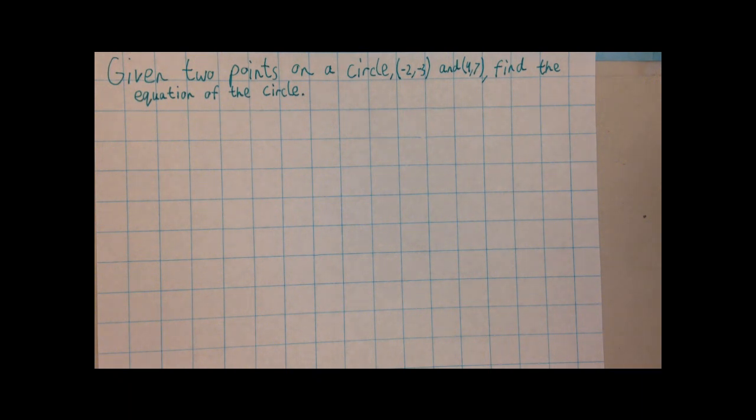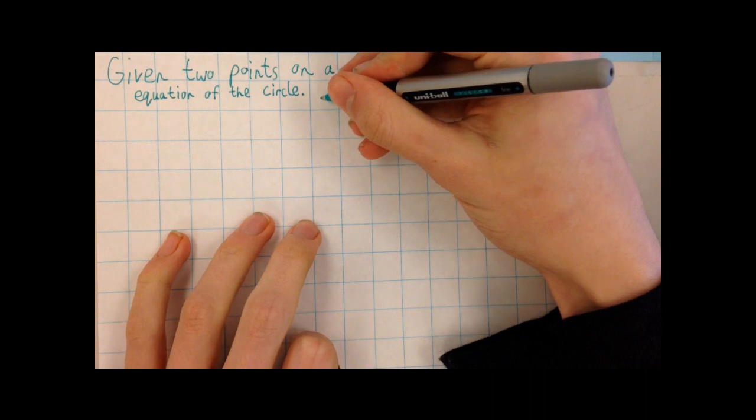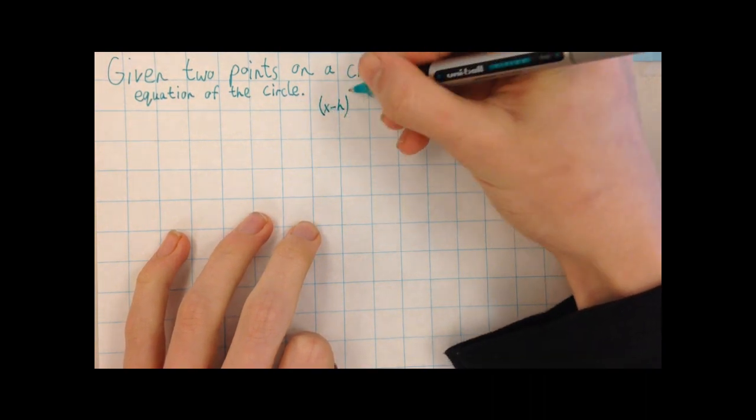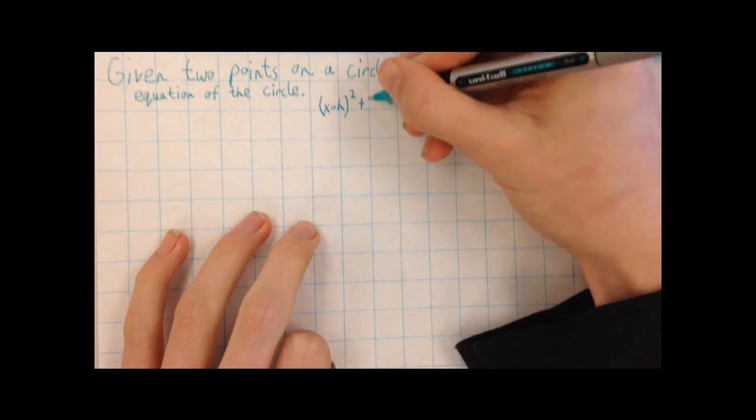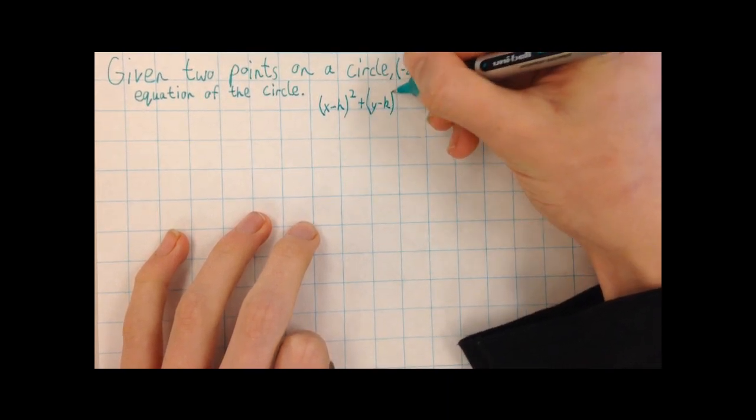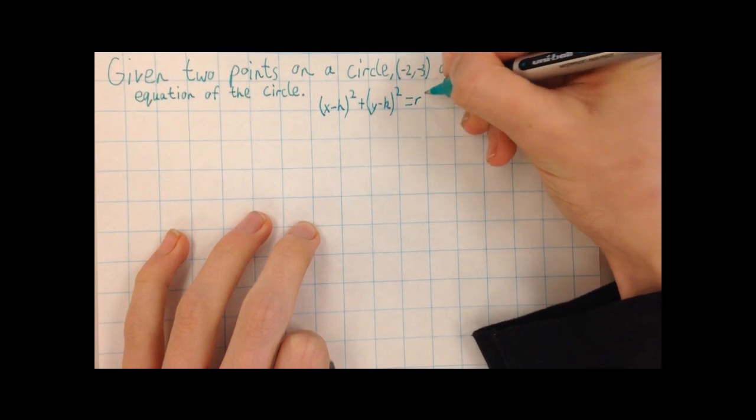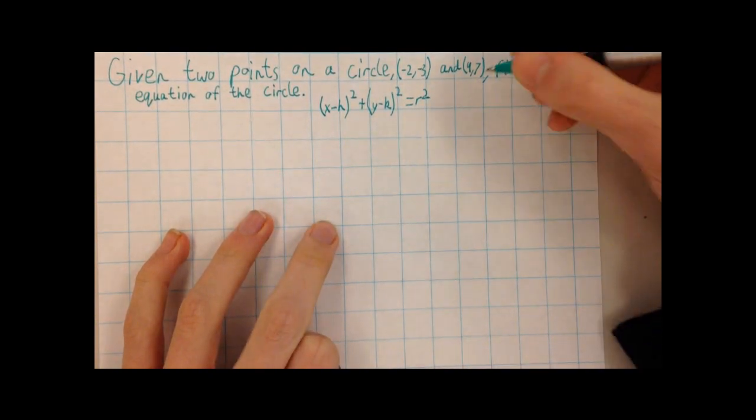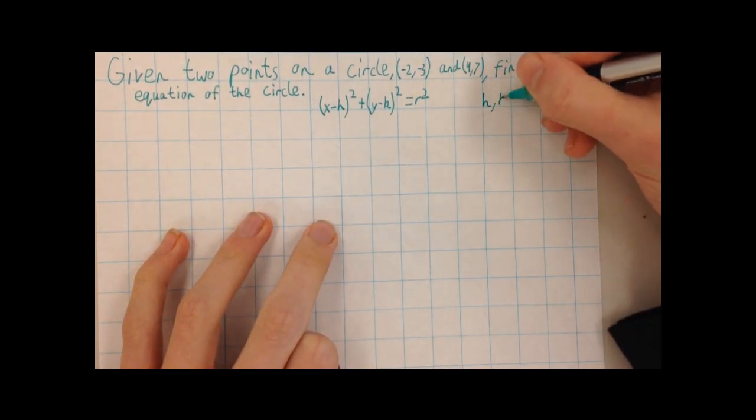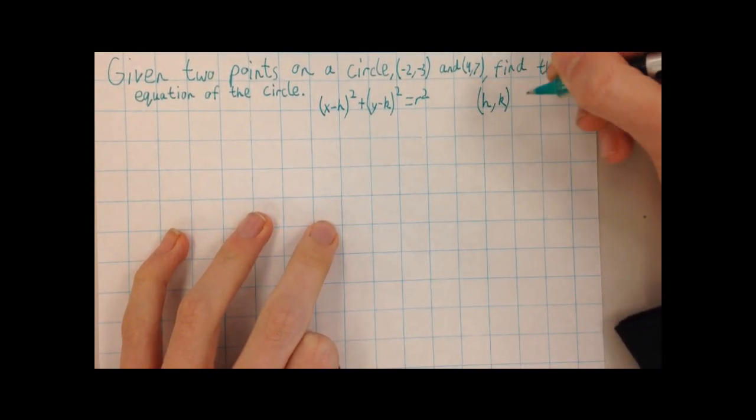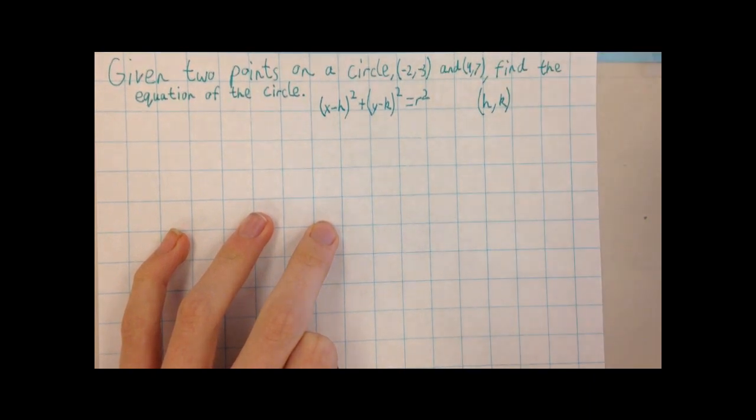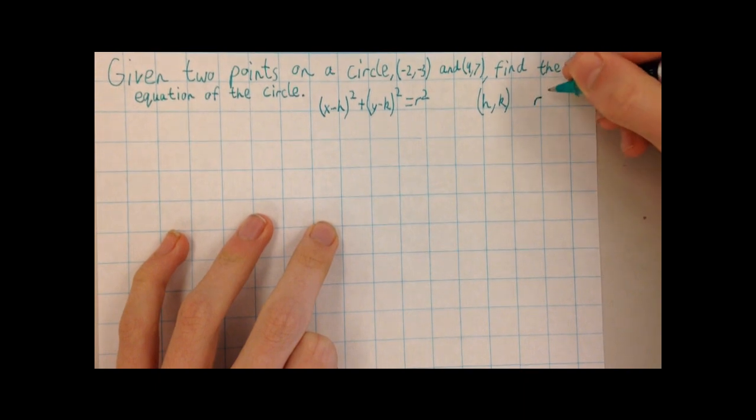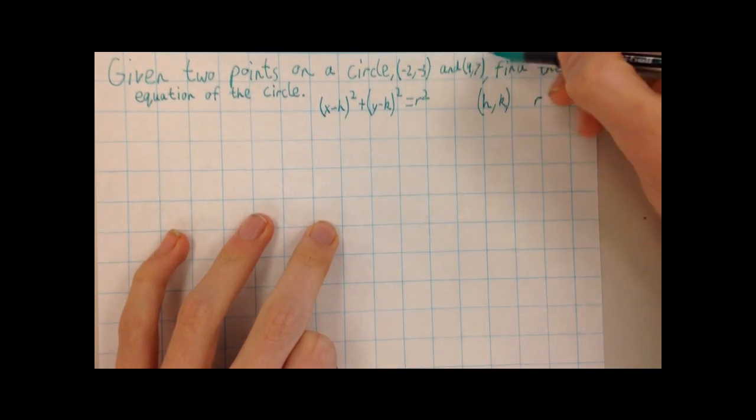The form that our answer will need to be in will look like this: x minus h squared plus y minus k squared equals r squared. The x and the y will stay as variables. However, the h and the k we will need to find out. That is the midpoint. It will be a set of coordinates. The h is the x, the k is the y. And we also need to figure out the r, the radius, which will be the distance between the midpoint and one of our two endpoints.